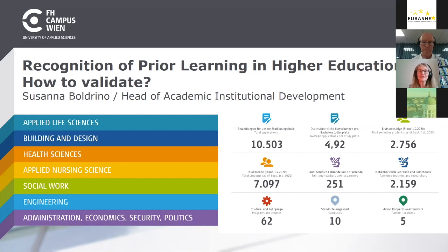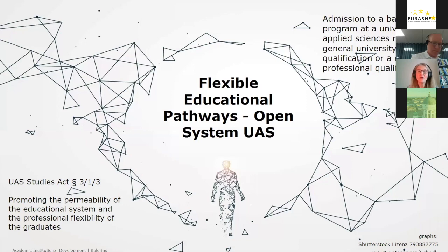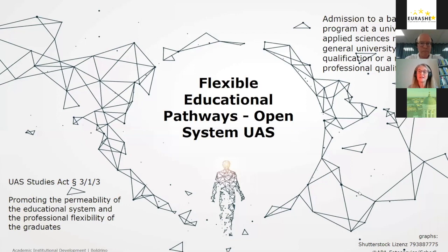This introduction slide illustrates the profile of our university. We are a multidisciplinary, open-minded, and dynamic organization. The colors you see show our seven academic departments and our diversity. We were founded in 2001, so we are still a young university. In 2001 we offered two degree programs, and now we have 62 bachelor and master study programs. We are the largest university of applied sciences in Austria with more than 7,000 students.